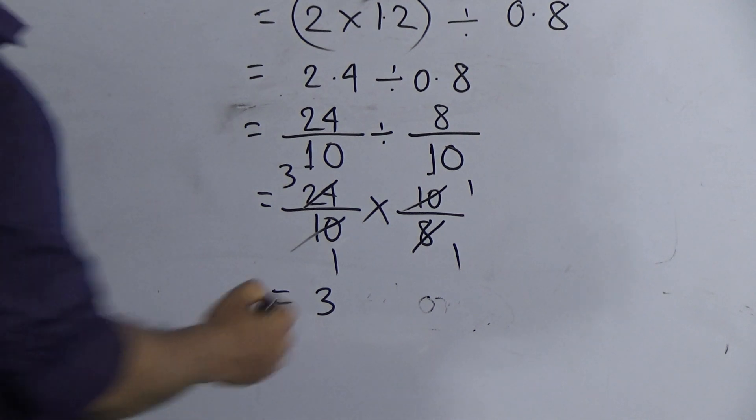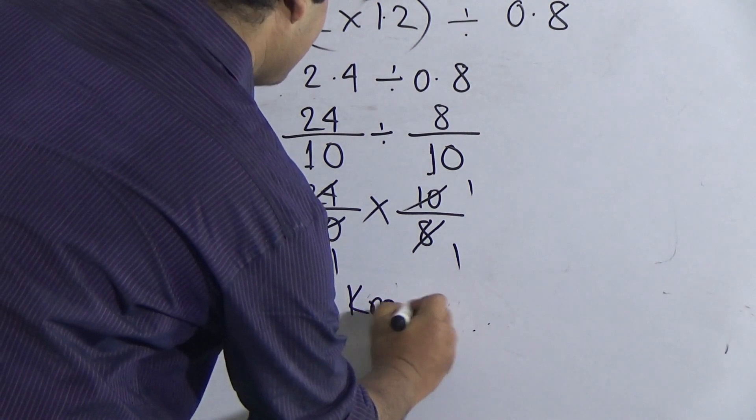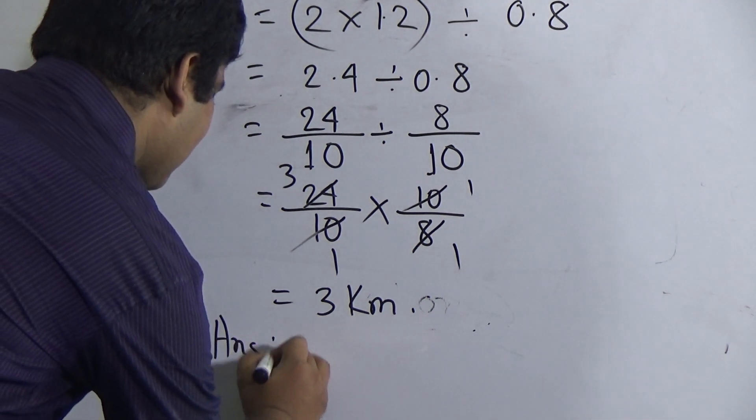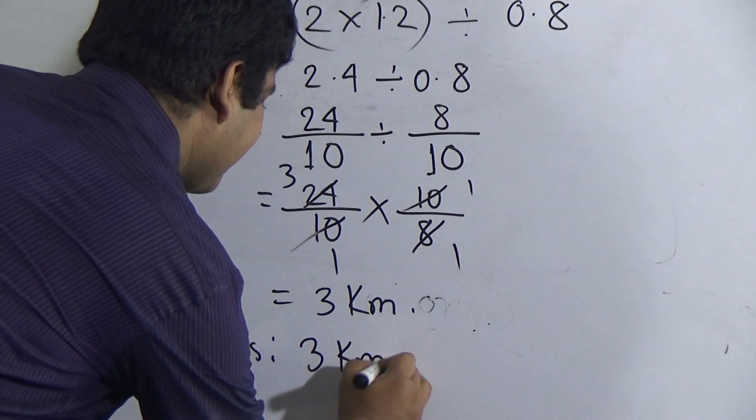So, 3 kilometer is the required answer. That means, 3 kilometer is the base of the required triangle. As solution is done, we must write answer: 3 kilometer.